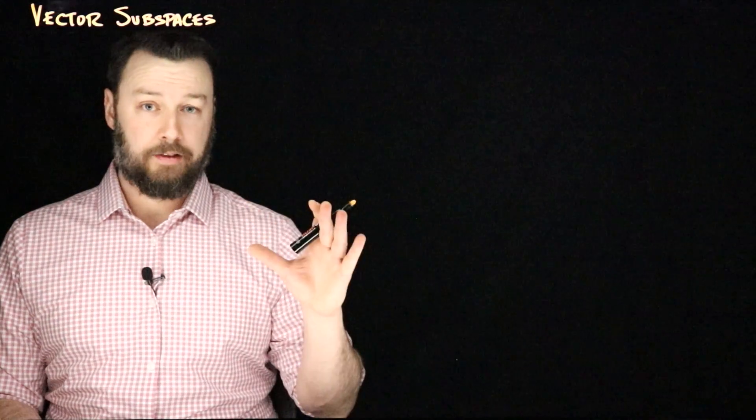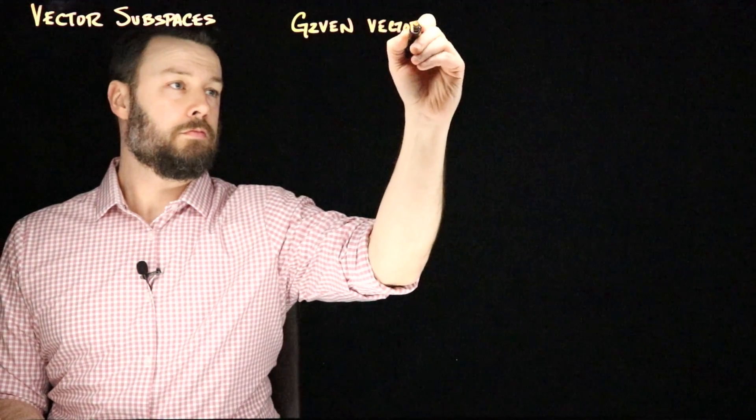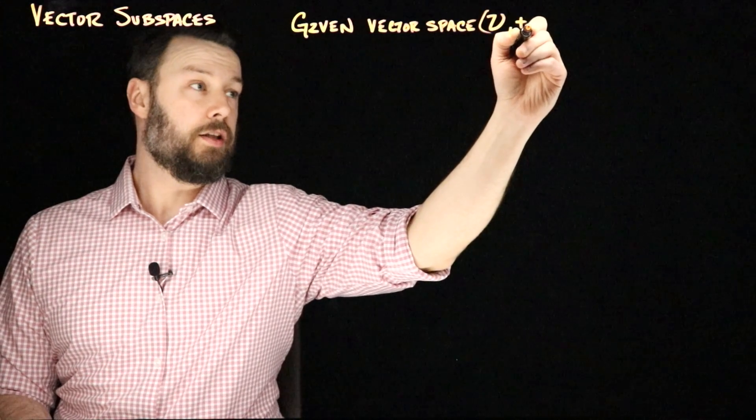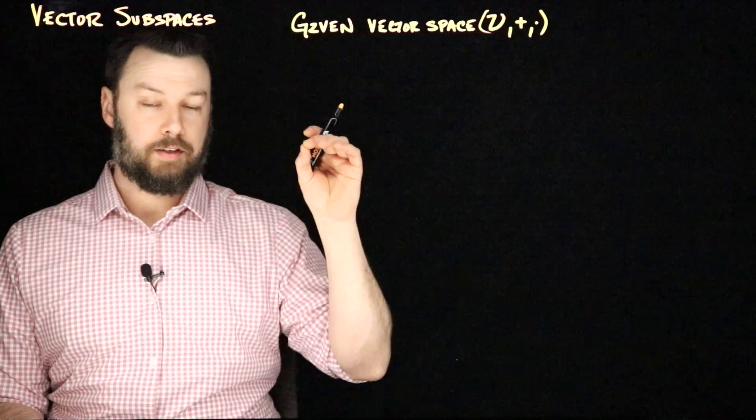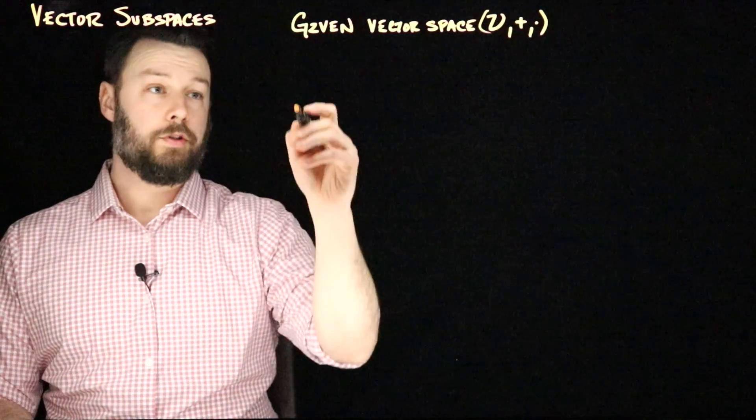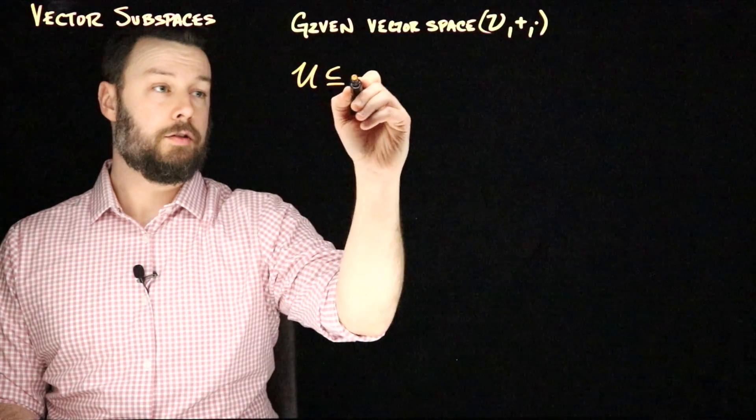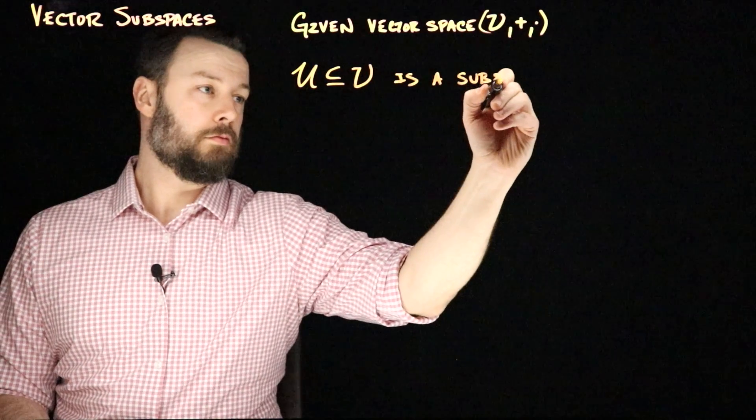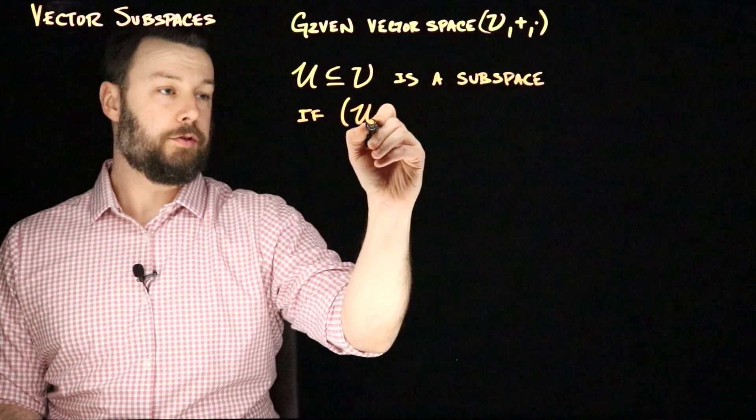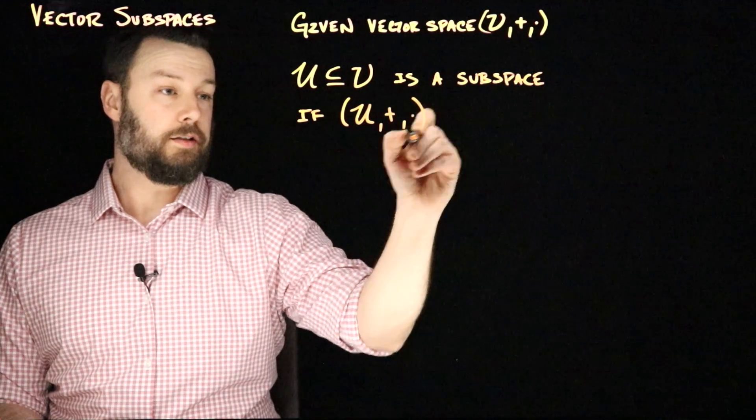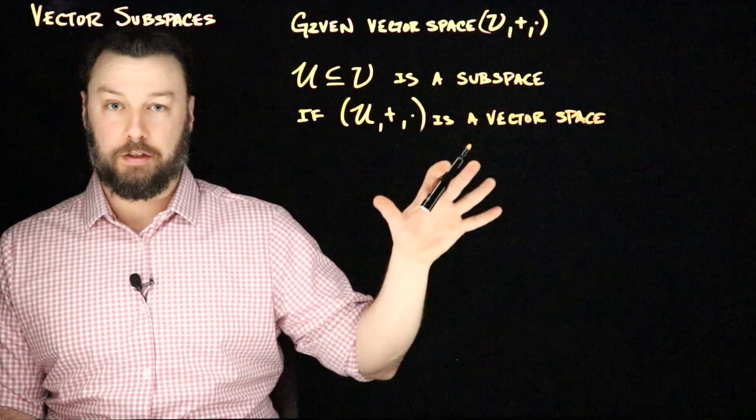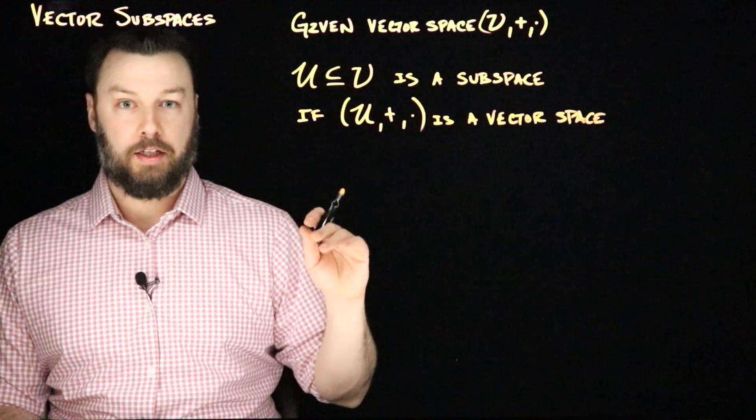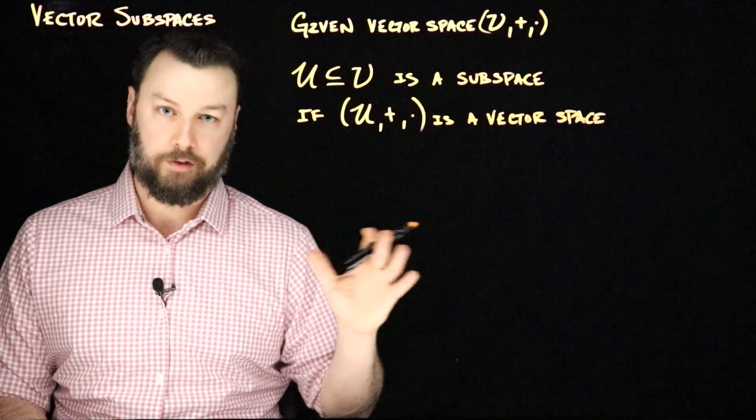Now let's talk about vector subspaces, which are a key concept for linear algebra. So if we have a vector space V with, of course, our operations addition and scaling, we call a non-empty subset U of V a subspace if it satisfies all of the requirements of a vector space. So U, that is a subset of V, is a subspace if the combination of U, plus, and scaling is a vector space. U has all the same properties. It's closed, it's an abelian group, it has scaling, everything we listed just a second ago, except that U is a subset of another vector space V that also satisfies all of those properties.